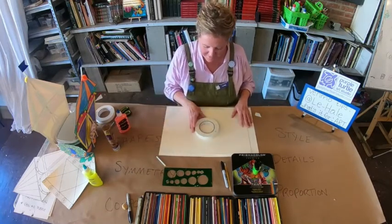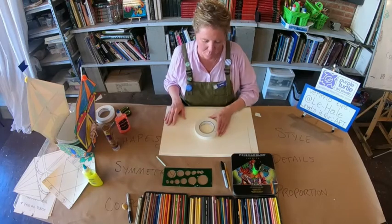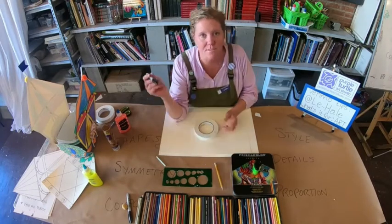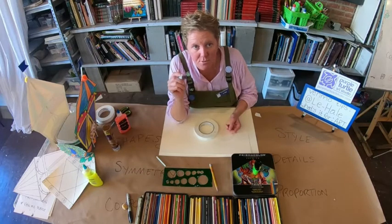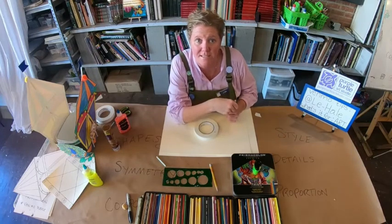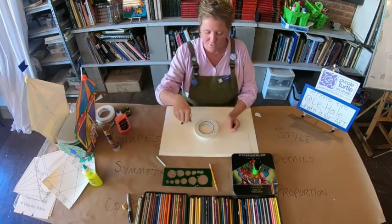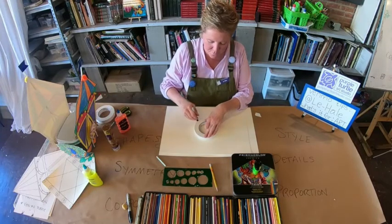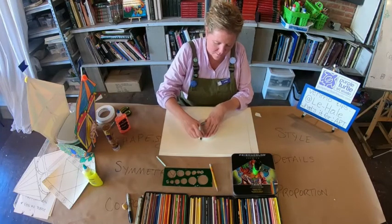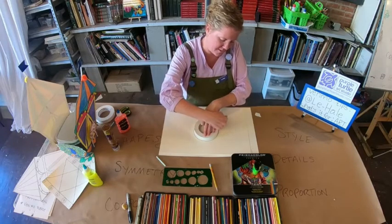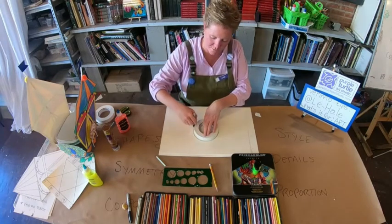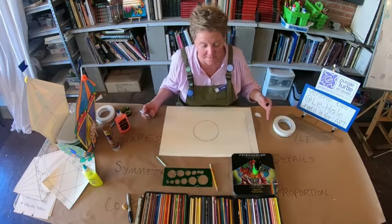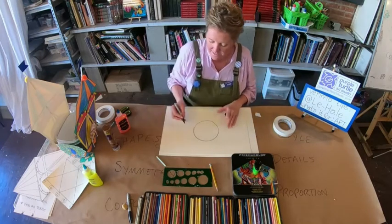I'm going to start with a circle in the middle because that's going to be my center point — and that's going to be my carousel. I am using a Sharpie so you can see, but you need to use pencil so you can erase lines that you don't want. You can trace all the way around this circle to make our centerpiece, and it can be pretty symmetrical — but it doesn't have to be.